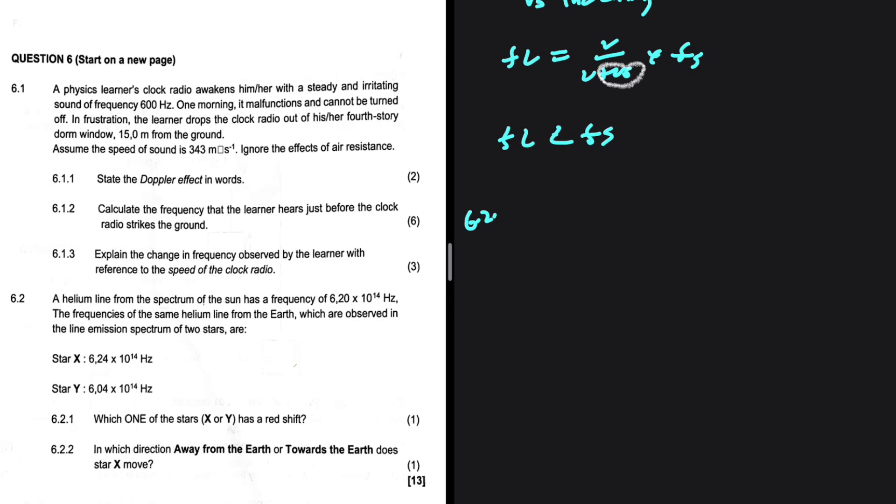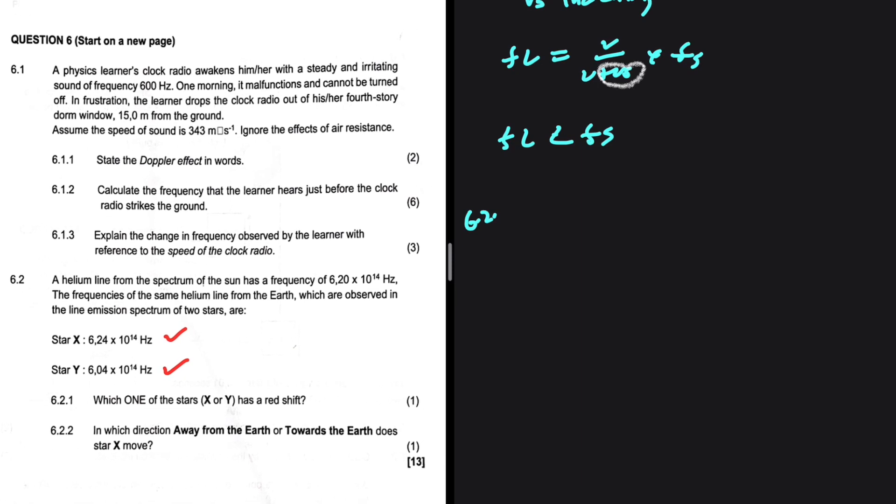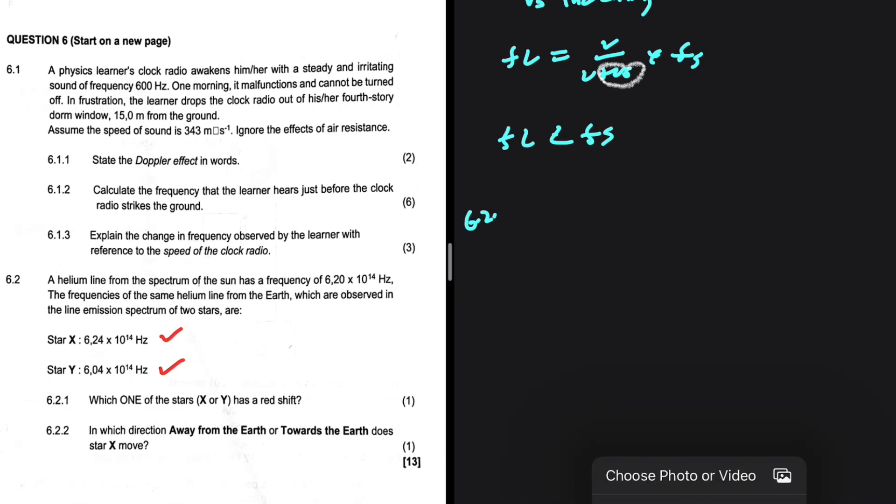6.2: A helium line from the spectrum of the sun has a frequency of 6.2 × 10¹⁴ Hz. The frequencies of the same helium line from the earth, which observed in the line emission spectrum of two stars, are: for star X, 6.24 × 10¹⁴ Hz, and for star Y, 6.4 × 10¹⁴ Hz. This is an interesting one because instead of having the wavelength, we are given the frequencies of distant stars. Usually it is wavelength, so it's quite an interesting question.